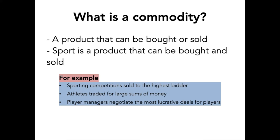We begin by defining what a commodity is. A commodity is a product that can be bought or sold, and throughout this presentation you'll understand that sport over time has become a product that can be bought and sold — so it is seen as a commodity. Examples include how sporting competitions are packaged up and sold to the highest bidder, such as broadcast networks like Channel 9 or Foxtel, how athletes can be traded for large sums of money and earn large salaries, and how player managers are able to negotiate lucrative deals for their players.